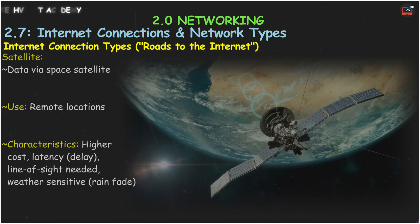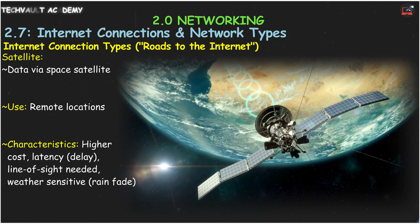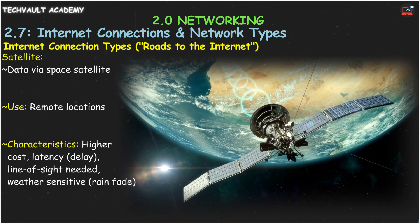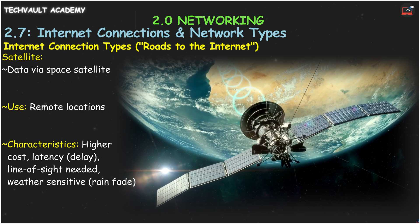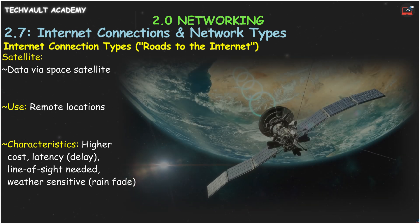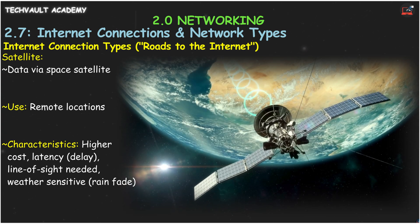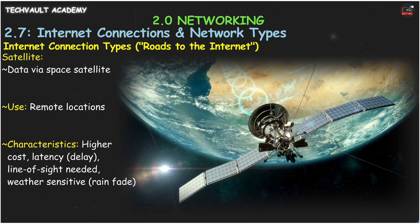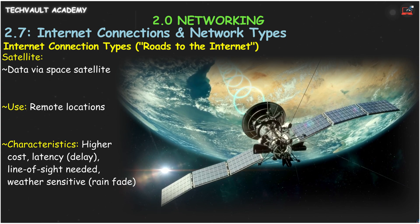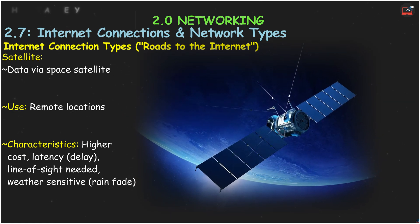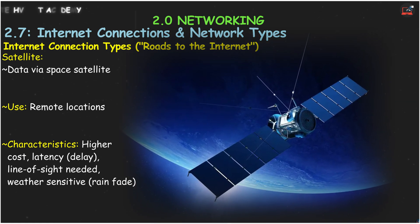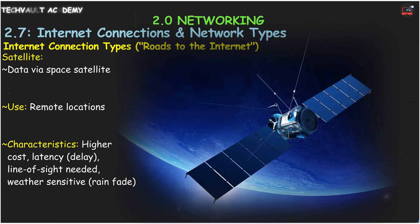First, satellite internet. Your data bounces off a satellite in space — it's great for remote locations where other options don't reach. Speeds are decent, around 100 megabits per second down. But the downside is higher cost and latency, that delay from the long signal travel. Newer systems like Starlink are improving this. You also need a clear line of sight, and bad weather can disrupt it — that's called rain fade.